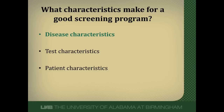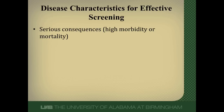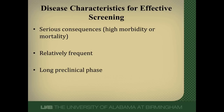Think about the characteristics that make for a good screening program — three classes: disease, test, and patient characteristics. Focusing on disease characteristics: first, the disease has to have serious consequences, morbidity or mortality associated with it. We don't screen for toenail fungus because it really doesn't matter clinically. It needs to be relatively frequent so it's worth our while. It'd be nice if it has a long preclinical phase — that asymptomatic period before clinical diagnosis gives us more time to find the disease. And finally, we must have effective therapy; it makes no sense to find something we can't help the patient with.